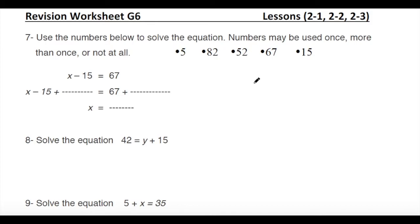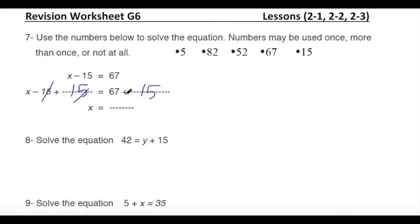Next: use given numbers to solve x minus 15 equals 67. We use inverse operations — since we have minus 15, add 15 to both sides using the addition property of equality. The minus 15 and plus 15 cancel, leaving x alone. So x equals 67 plus 15, which equals 82.